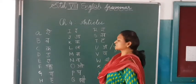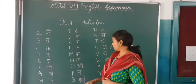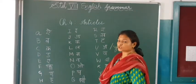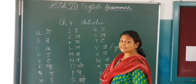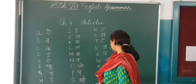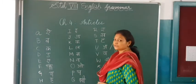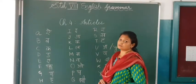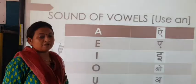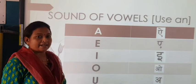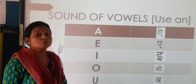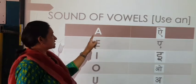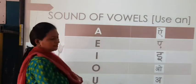V gives the sound — van. W gives the sound — watch. X, Y, Z — Z gives the sound — Z. You will be writing 'an' based on these sounds only.